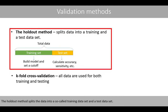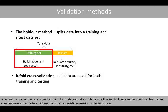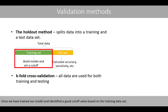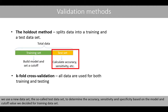The holdout method splits the data into a training dataset and a test dataset. A certain fraction of the data is used to build the model and set an optimal cut-off value. Building a model could involve combining several biomarkers with methods such as logistic regression or decision trees. In this lecture, we will only use one variable, so the training data will be used only to identify the best cut-off value. Once we have trained our model and identified a good cut-off value based on the training data, we use the test dataset to determine the accuracy, sensitivity, and specificity based on the model and cut-off value decided from the training data.